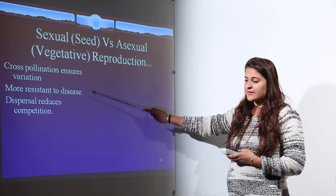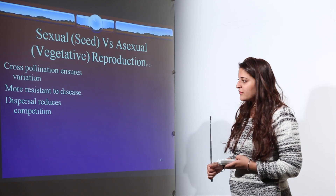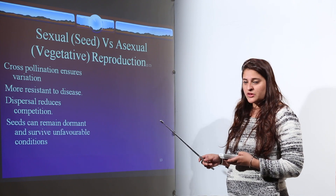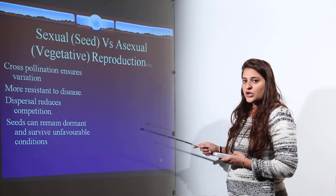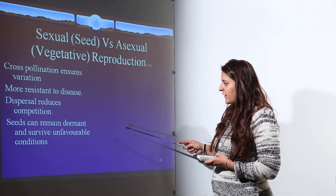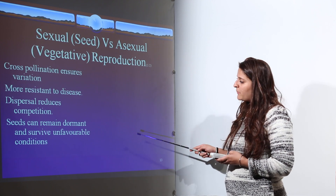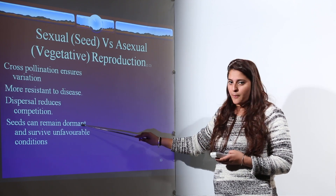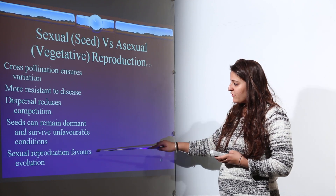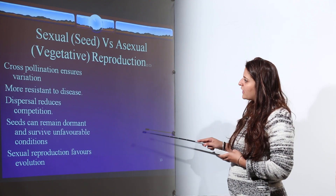Another difference is dispersal — cross-pollination requires dispersal, which reduces competition between different plant species. Seeds can remain dormant, an inactive stage of the embryo, and survive unfavorable conditions until favorable conditions allow the dormant seed to become active. Sexual reproduction also favors evolution, as we can track how organisms have evolved from the parent plant.